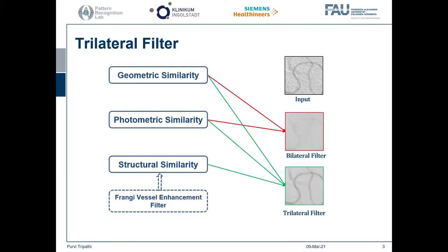A bilateral filter, which is a common edge-preserving filter, is the foundation of our work. To efficiently denoise the image in a single iteration, a bilateral filter considers a wider neighborhood, which often results in over-smoothing of low-contrast vessels.